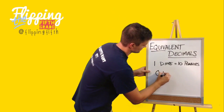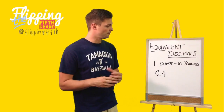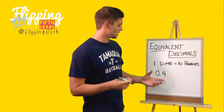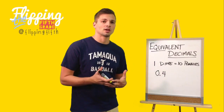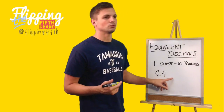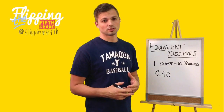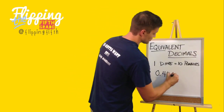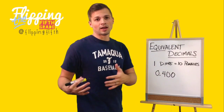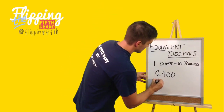Let's look at four-tenths. Four-tenths can be written in multiple ways. The trick to write equivalent decimals is simply adding zeros to the right of the number. So four-tenths is the same as four-tenths, which is also the same as four hundred-thousandths. By adding these zeros after the number, you do not change the value of the number.